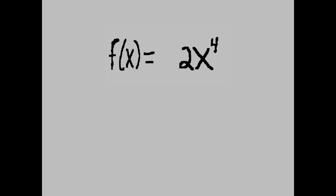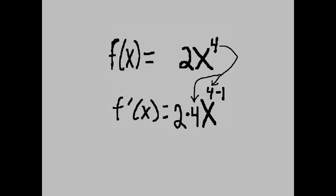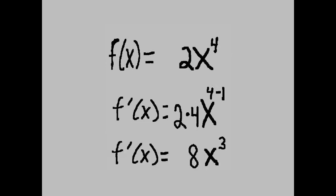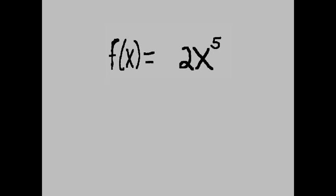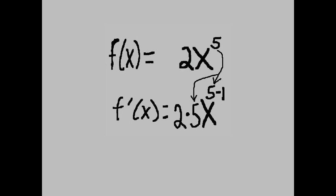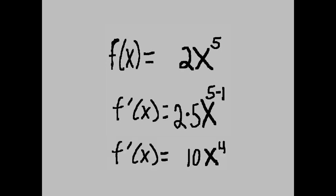f of x equals 2x to the 4th power. f prime of x equals 2 times 4x to the 4 minus 1 power, which equals 8x to the 3rd power. f of x equals 2x to the 5th power, f prime of x equals 2 times 5x to the 5 minus 1 power, which equals 10x to the 4th power.